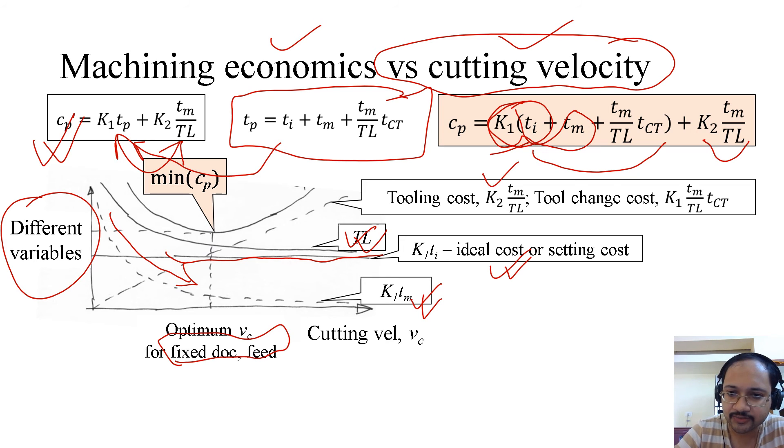And finally the tooling cost, which is K2 times tm over tl, which we just mentioned, then also the tool change cost, which is K1 tm over tl. So this is more like a linear factor.